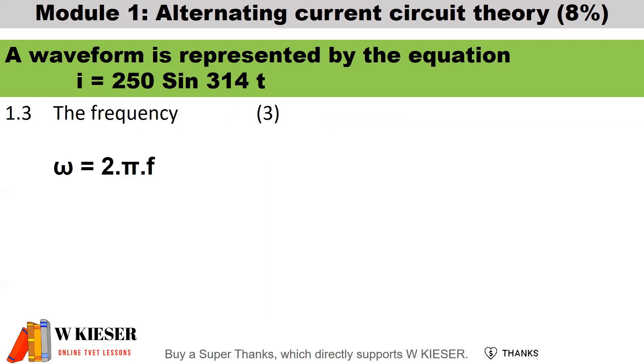To calculate the frequency, it is the angular velocity in radians per second, which is equal to 2 times pi times frequency. Therefore, the frequency will be 314 divided by 2 divided by pi, and this implies that there are 50 cycles completed in one second.